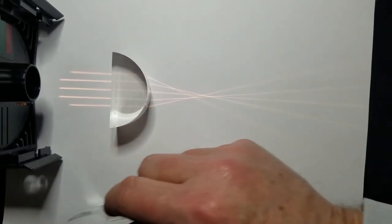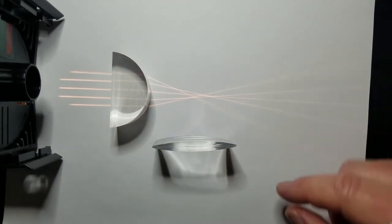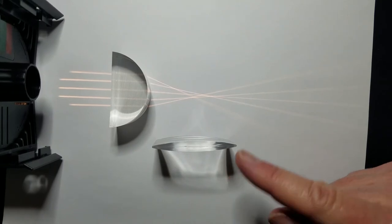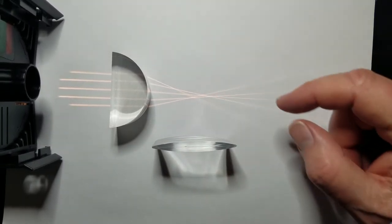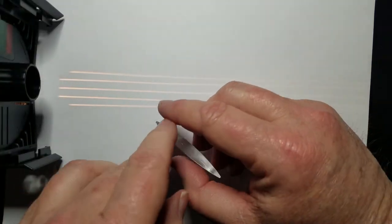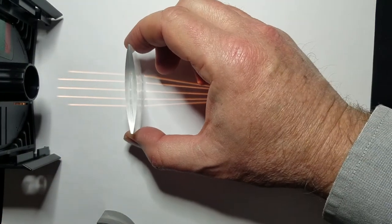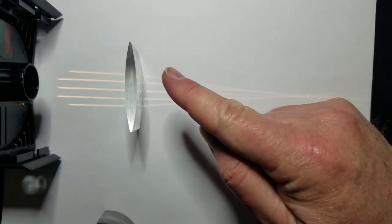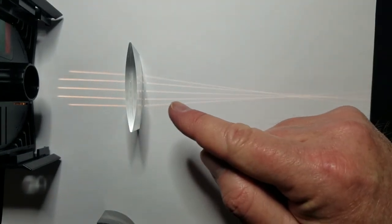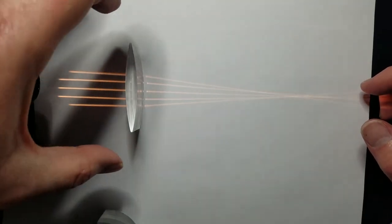Just remember if it's convex, it's thicker in the middle, thinner on the edges, and it focuses light to a focal point so that light can be concentrated. And if I put this one back here, the beam that was on the top after it crosses ends up on the bottom. The beam that's on the bottom after it crosses ends up at the top.